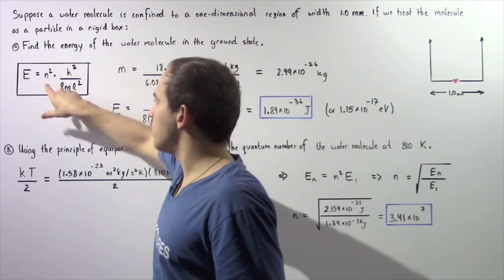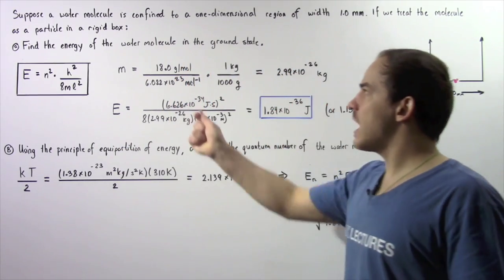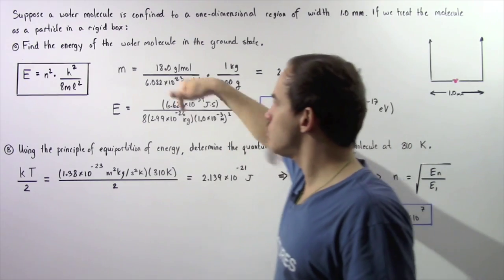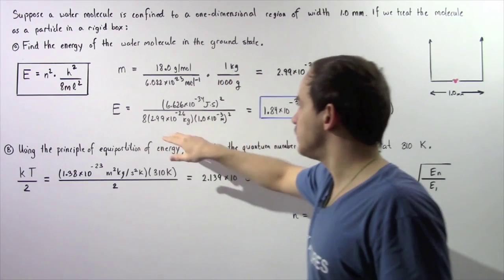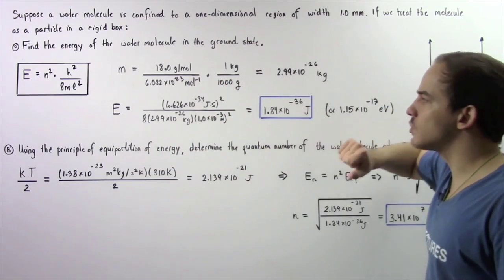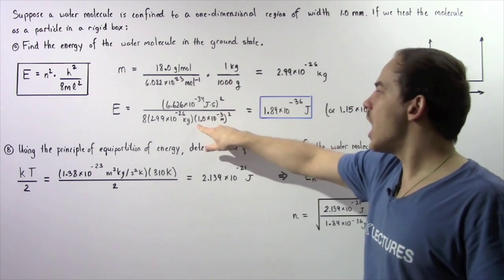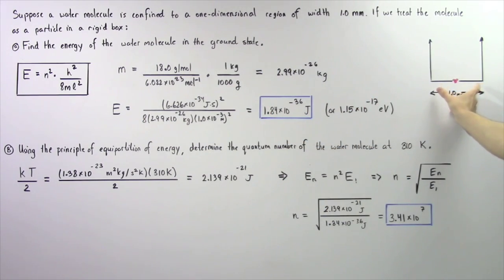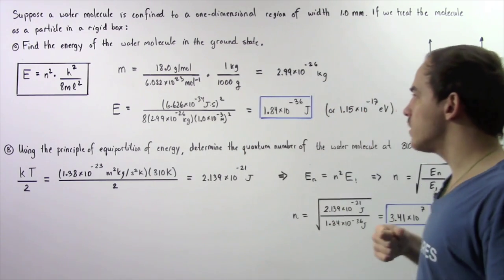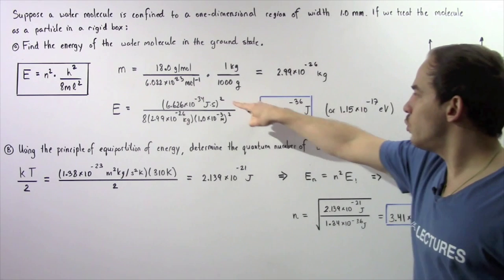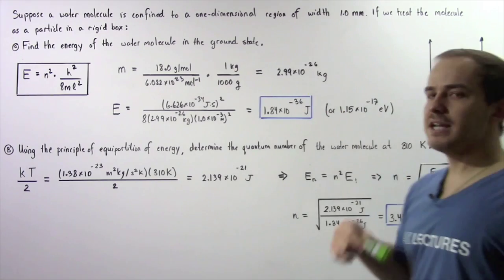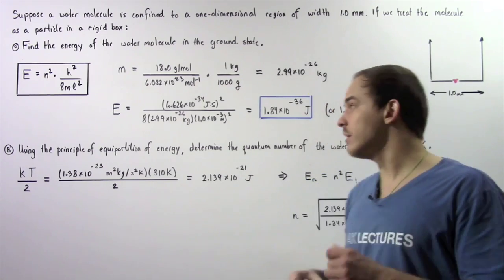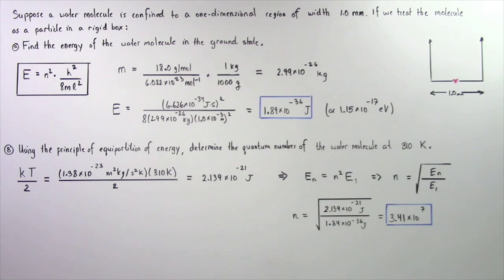Now we are ready to apply this equation. The energy of our water molecule in the ground state equals the square of Planck's constant divided by 8 multiplied by the mass of the water molecule in kilograms multiplied by the square of the width of our rigid box. We get about 1.84 times 10 to the negative 36 joules, which is equivalent to about 1.15 times 10 to the negative 15 electron volts.